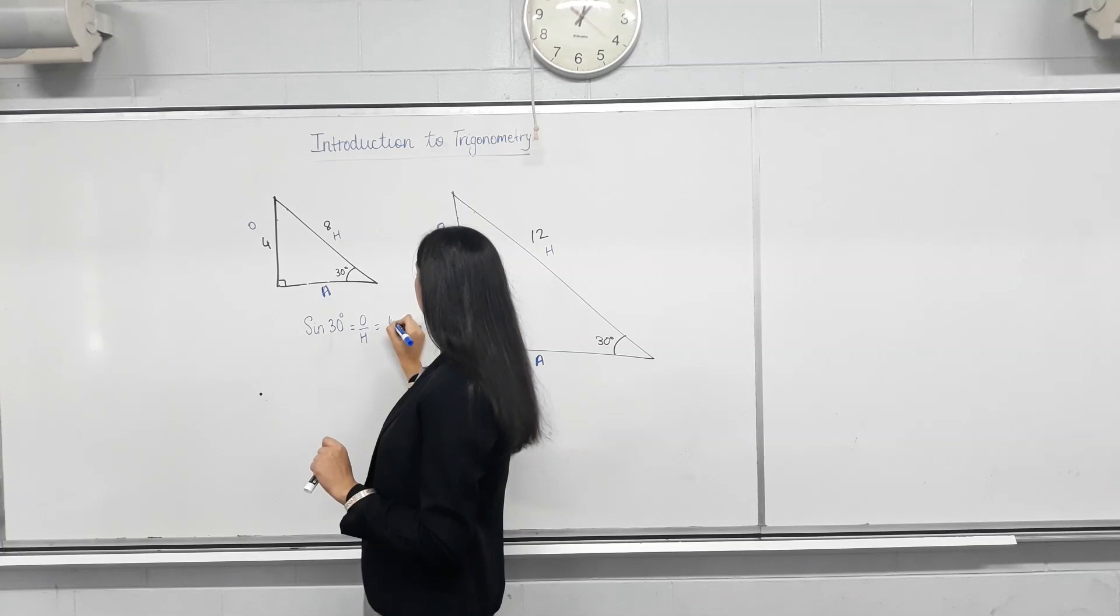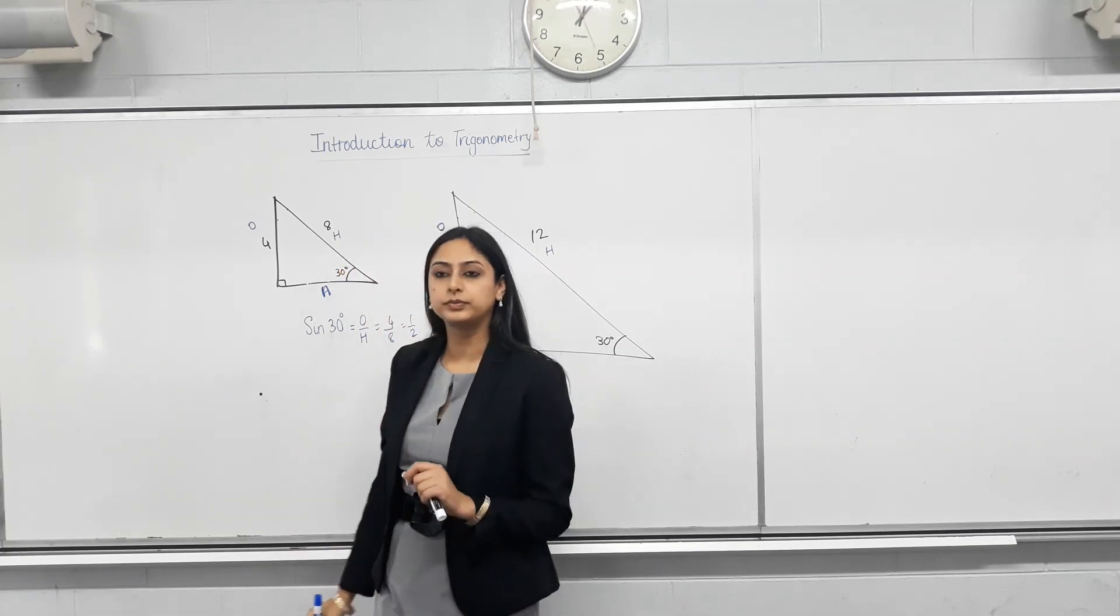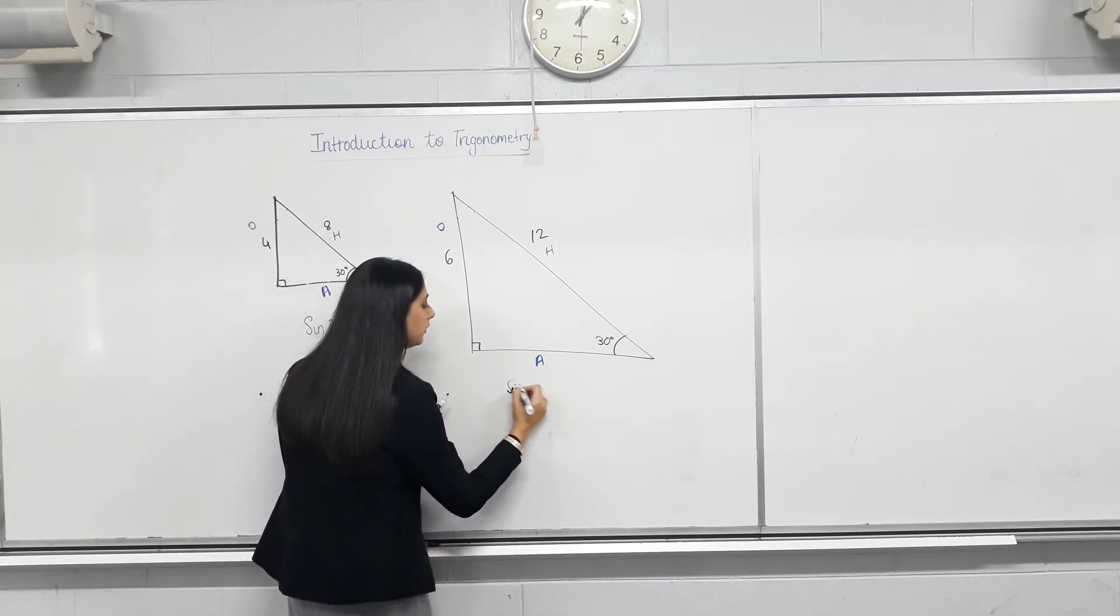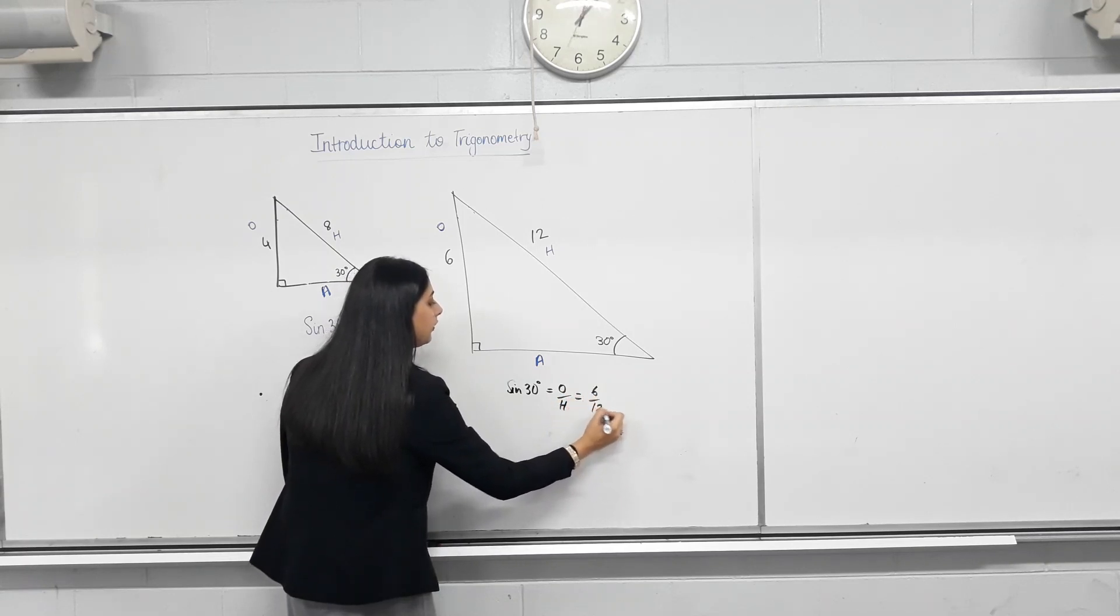Let's see what that is. So, O is 4. H is 8. So, what's sine of 30? Half. So, in this triangle, sine of 30. O over H. 6 over 12. Half.